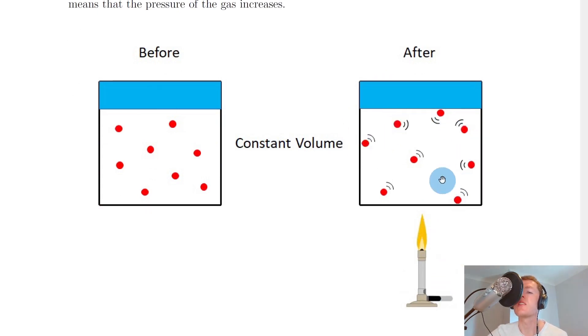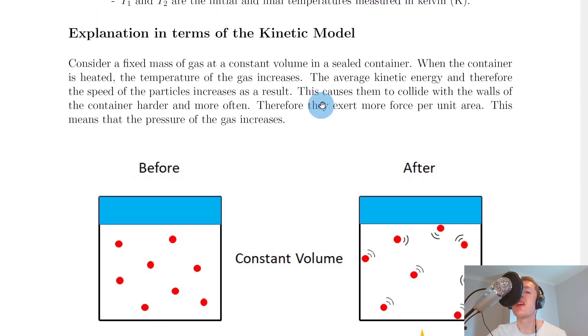you can see the little curved lines next to the particles here, which represents the particles moving faster than they were before. So because the temperature of the gas has increased, the particles have gained kinetic energy and therefore speed. We can then say that this causes them to collide with the walls of the container harder and more often. Therefore, they exert more force per unit area. This means that the pressure of the gas increases.